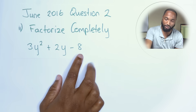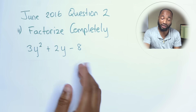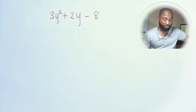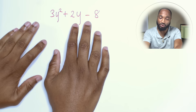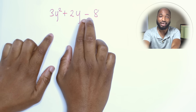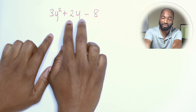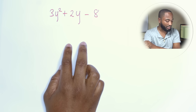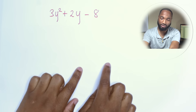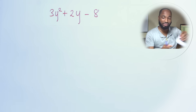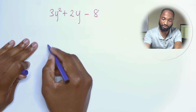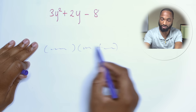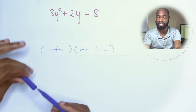Let's get into the question: 3y² + 2y − 8. To factorize this, the first step is to split the middle term into two terms. When you factorize a quadratic, the answer is going to look like two brackets — something written here and something written there — two brackets like that. That's what we're aiming for.